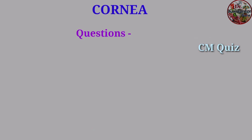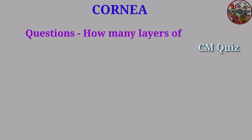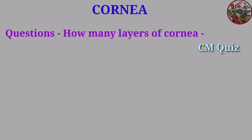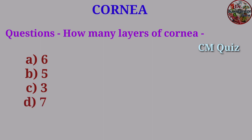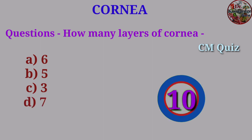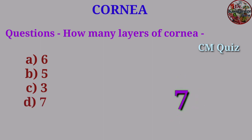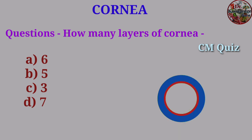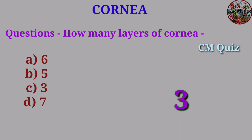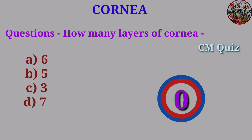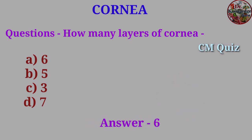Question: How many layers does the cornea have? A. 6, B. 5, C. 3, D. 7. Answer: 6.